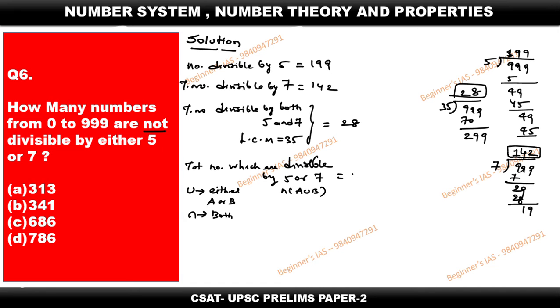N of A, that is the number which is divisible by 5, 199, plus, then N of B. N of B is nothing but the total number which is divisible by 7, 142, and then minus N of A intersection B. Here, N of A intersection B is total number divisible by both, which is nothing but 28.